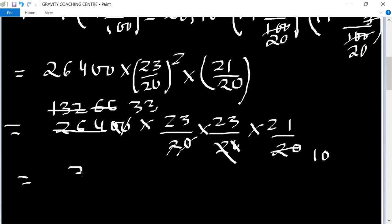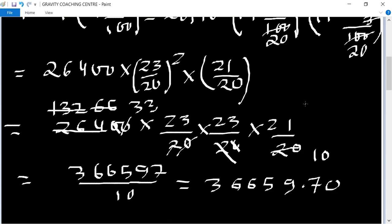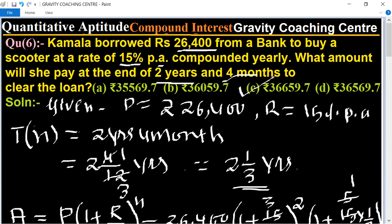Five nine seven upon ten equal to three double six five nine point seventy. So this is the required amount which will be paid after two years and four months. So option 36,659.7, option C is the correct answer.